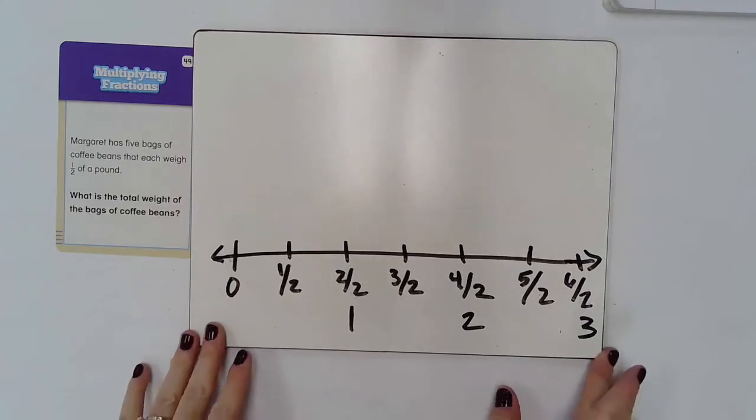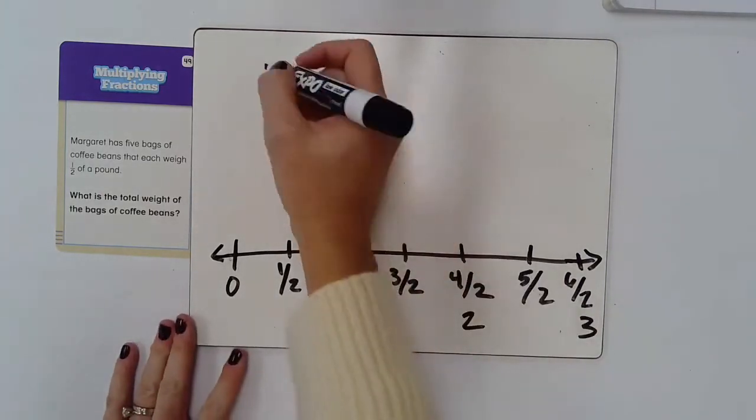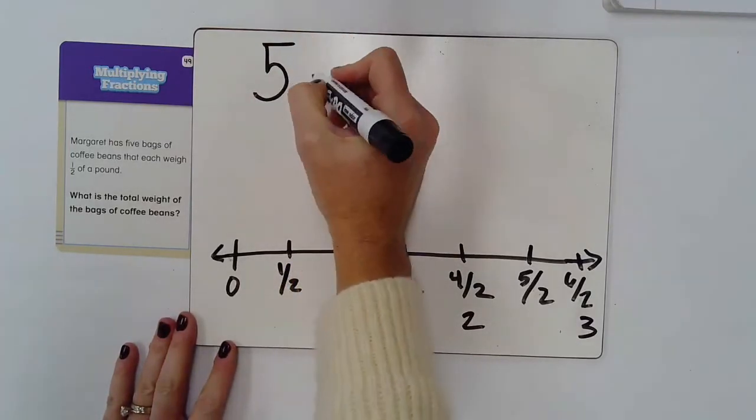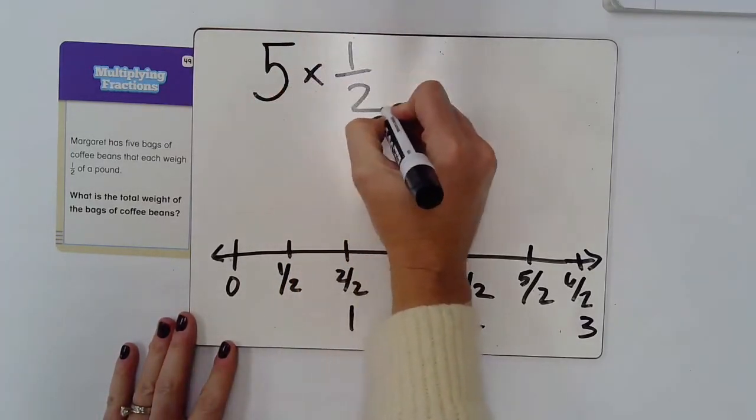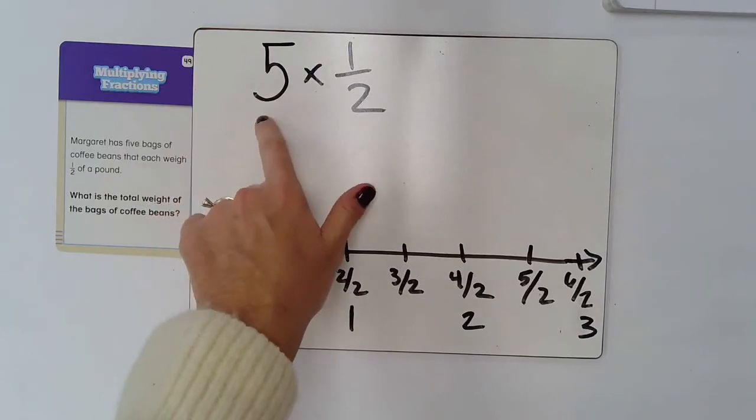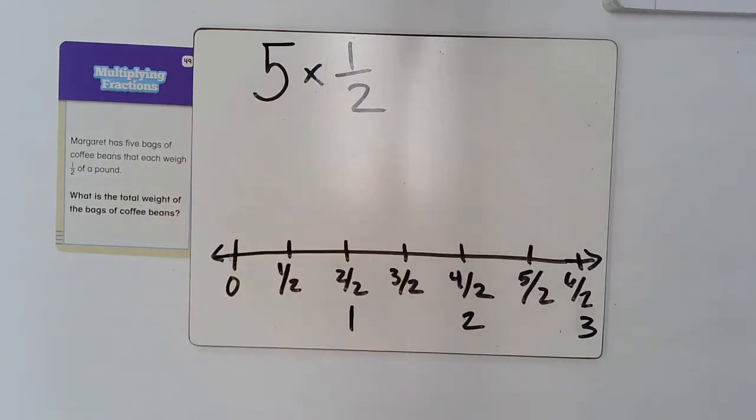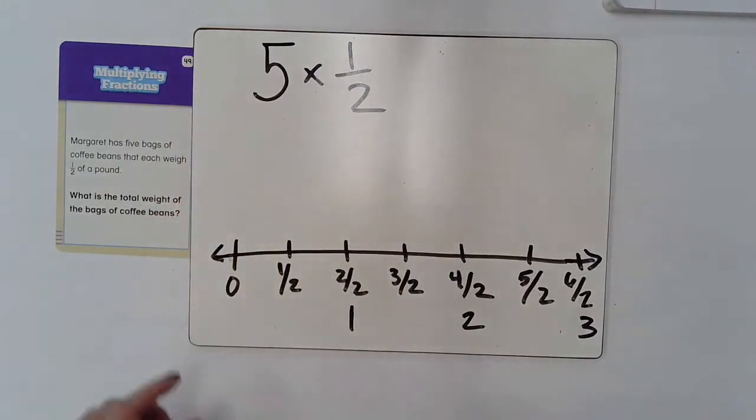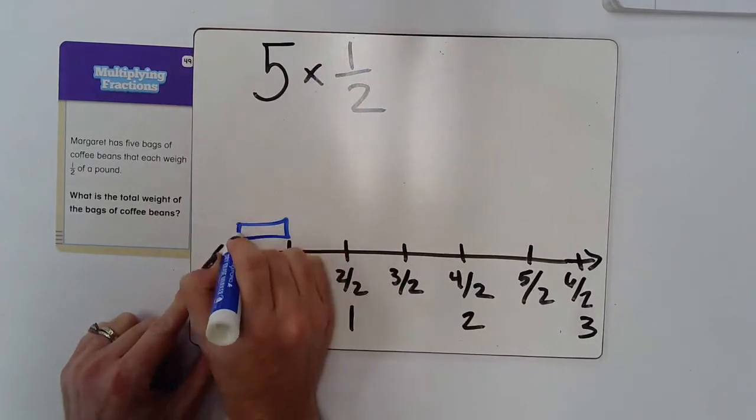Another way that you can solve these problems is by using a number line. So five times one-half or five groups of one-half. I can show you here.